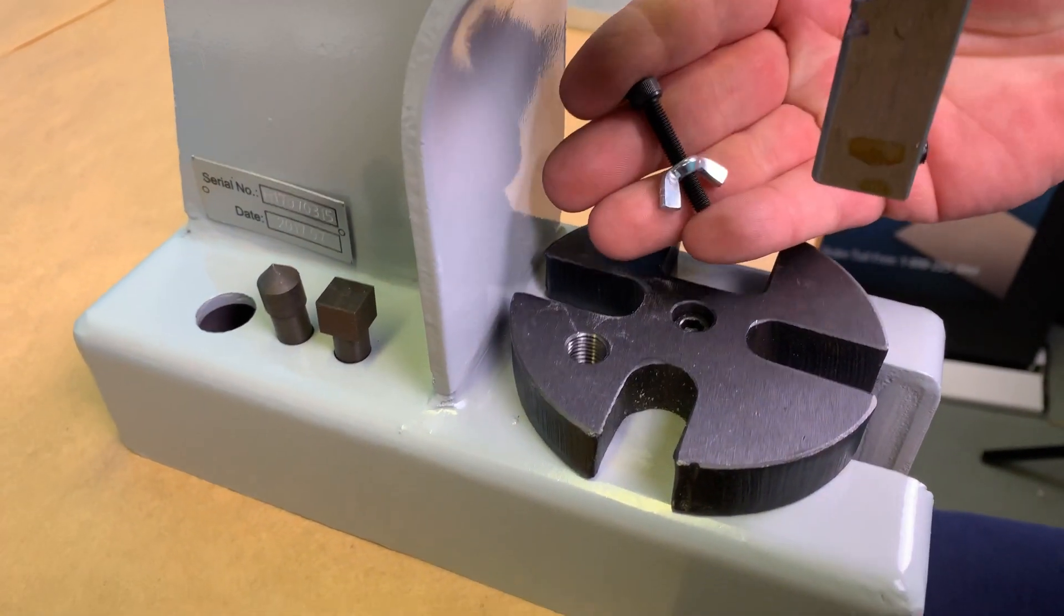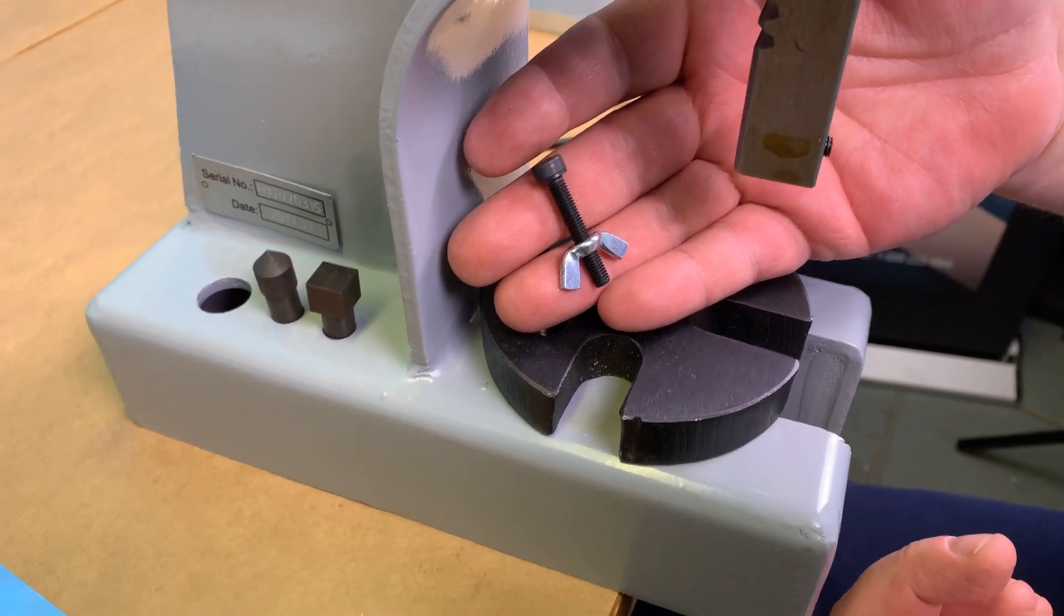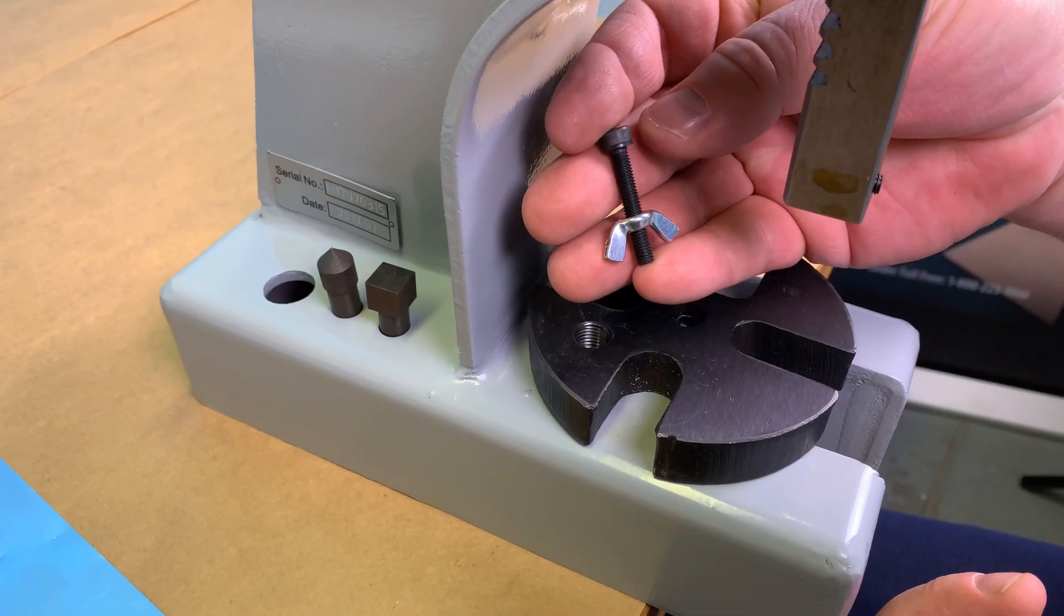We also provide an M5 screw and wing nut combination that allows for the full versatility of the 3/16ths of movement that you'll get out of our arbor press table.